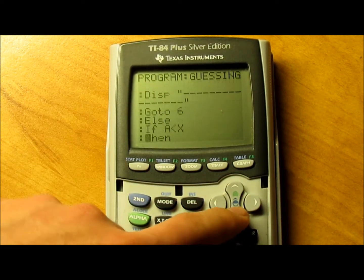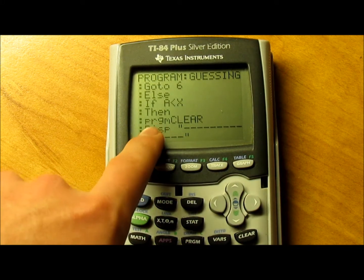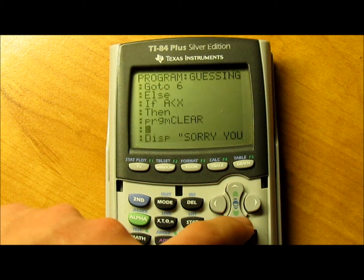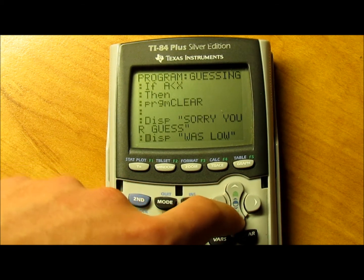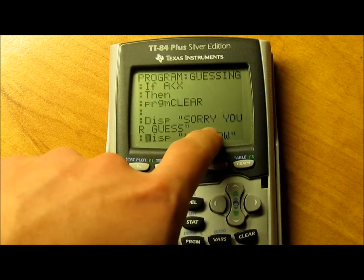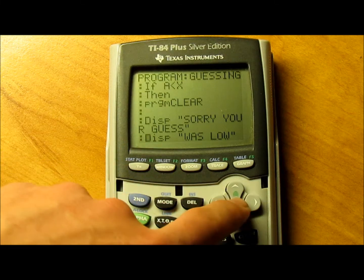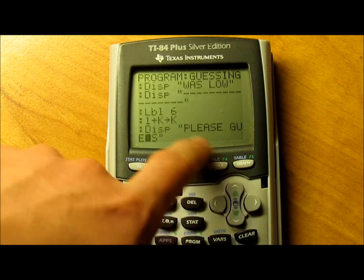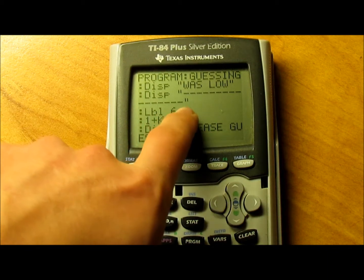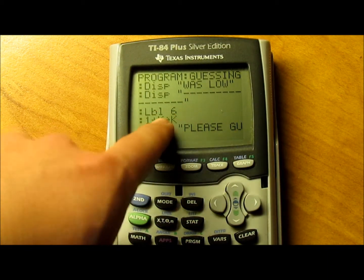If A is less than X, then run program clear, display that line. Then display sorry, your guess was low. Hit display again and put in another line, which is just a minus sign in quotations.